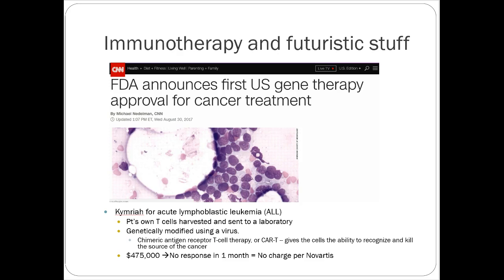Why not talk about futuristic drugs? The idea is you're using the body's own immune system, tweaking it, and forcing it to do things it's not doing correctly. Kymriah is an acute lymphoblastic leukemia treatment where they harvest the patient's T-cells, send them to a lab, and genetically modify them using a virus. The chimeric antigen receptor — or CAR-T — is the ability to recognize and kill a specific source of cancer. It costs about half a million dollars for one treatment, but Novartis will refund the cost if it doesn't work.